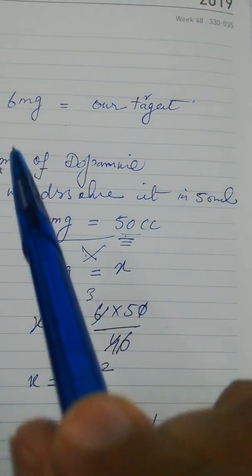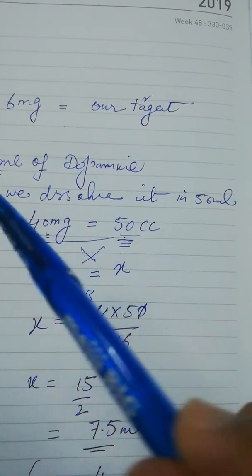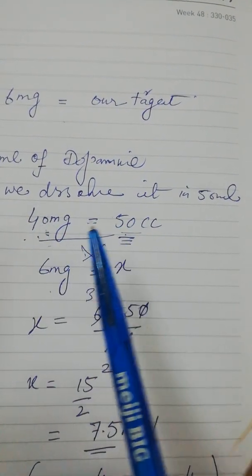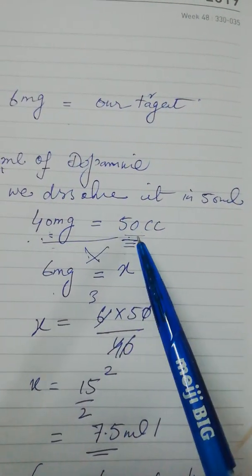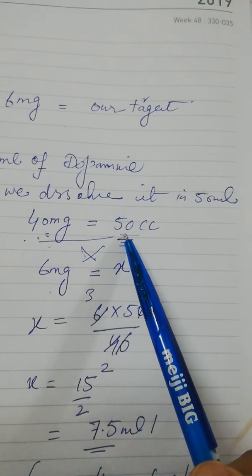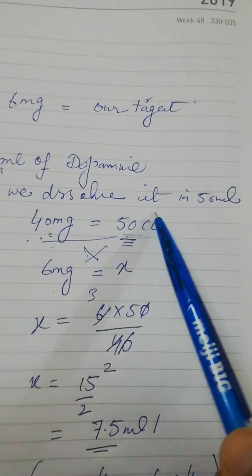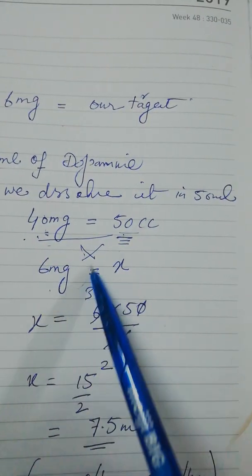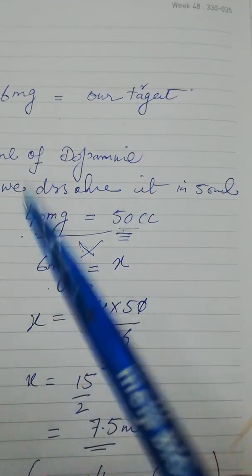We can say that as 1 ml is equal to 40 mg, the total amount of dopamine in this solution, the total solution of 50 cc, is 40 mg. But our target is to deliver only 6 mg.